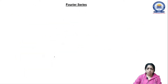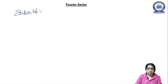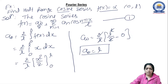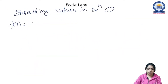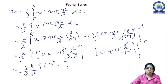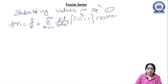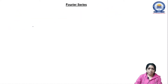Now substituting the values of a₀ and aₙ into equation 1: f(x) = L/2 + summation n=1 to infinity of [2L/(n²π²) · ((−1)ⁿ − 1)] · cos(nπx/L). This is the half range cosine series for the given function f(x) = x in the interval 0 to L.